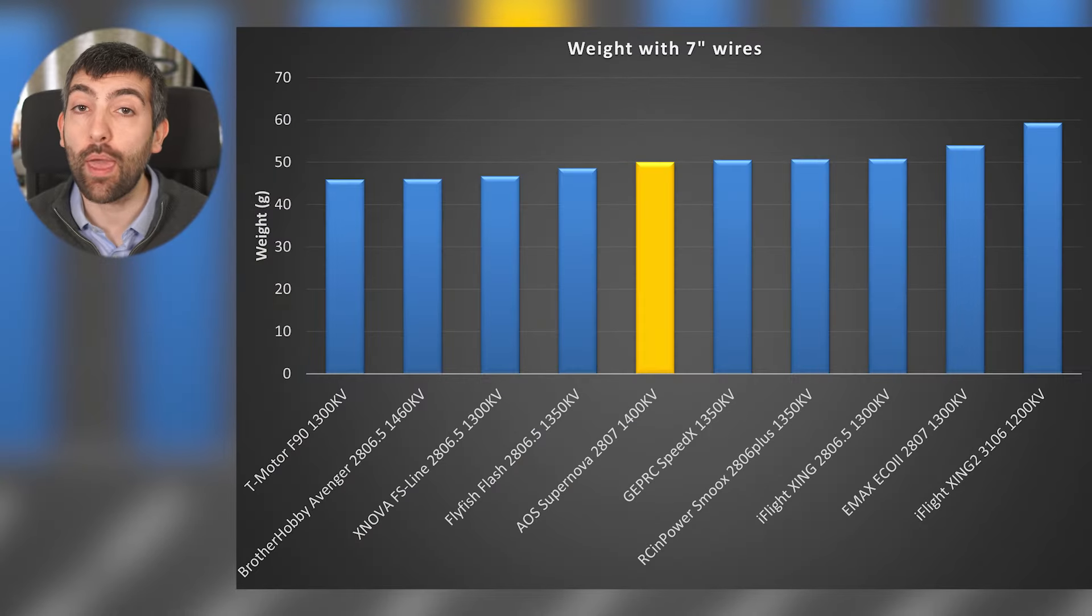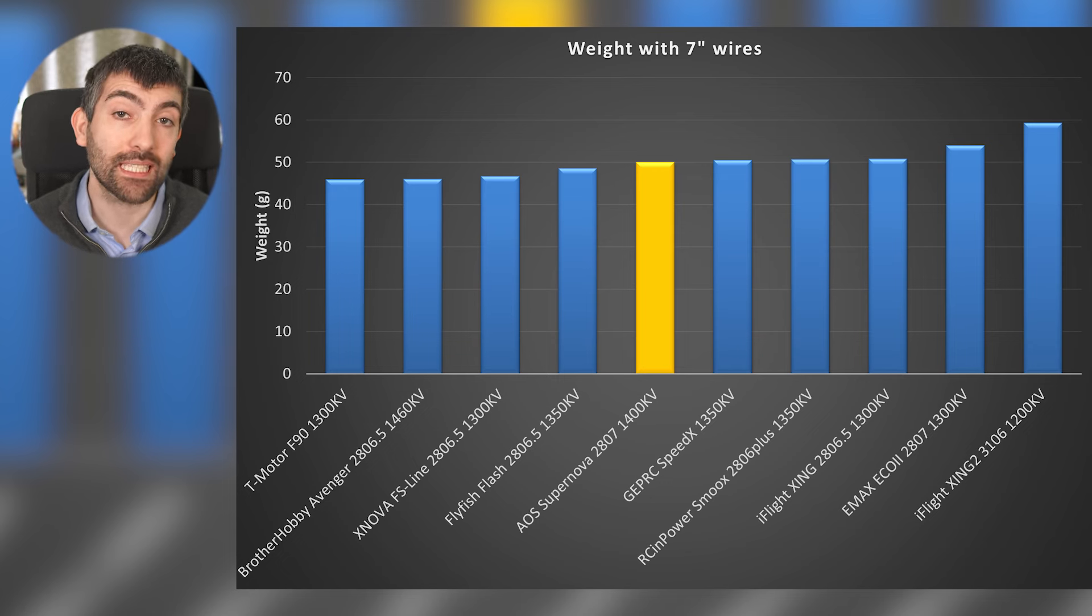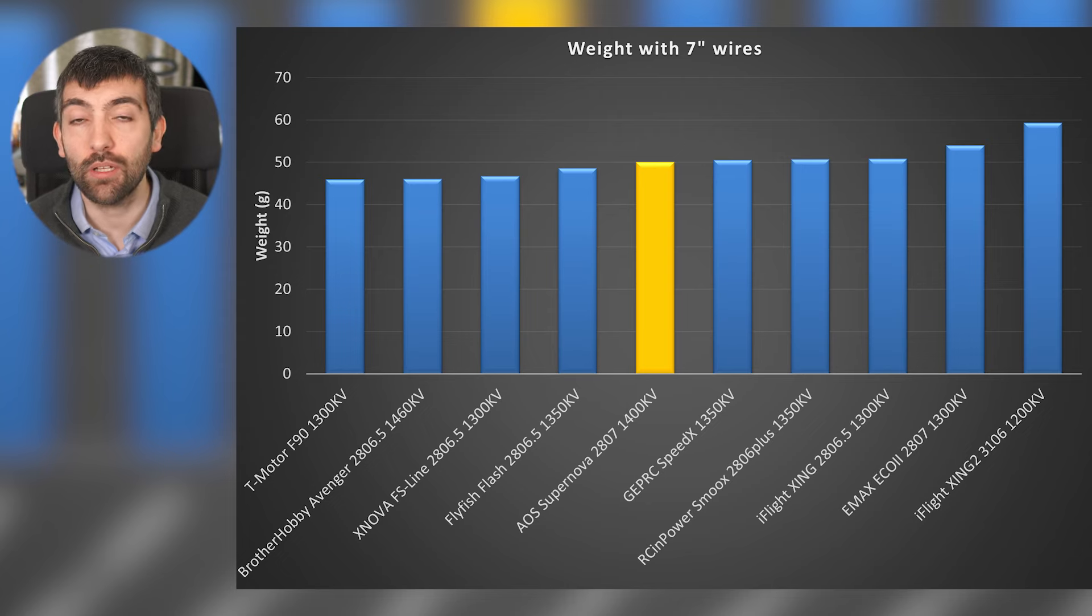If we compare the weight of the Supernova 2807 to the other 7 inch motors that I've tested, you can see that a weight of 50 grams puts it in the middle of the range. It's heavier than something like the T-motor F90 but lighter than something like the Emax Eco 2 and very similar to the weight of most 2806.5 motors.